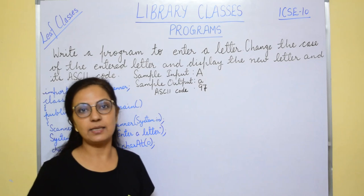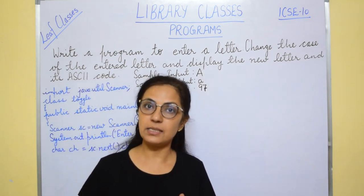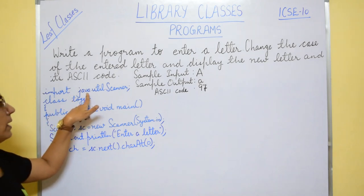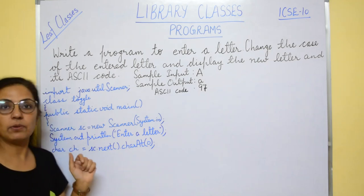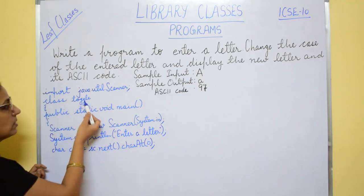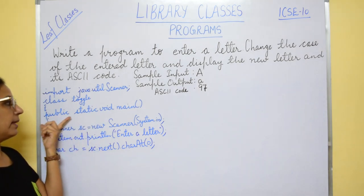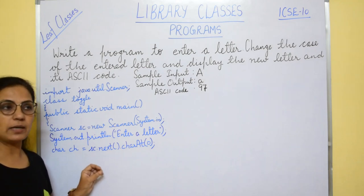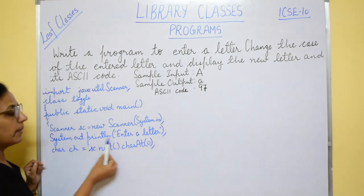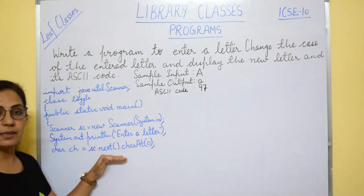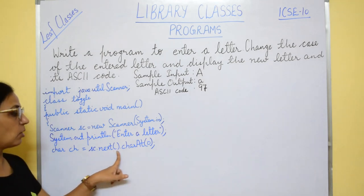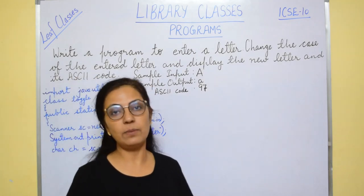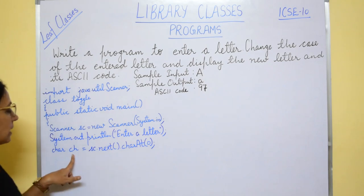First we have to input a letter. Children, whenever we have to input anything — whether it is an integer value, character value, or string — your program must begin with an import statement where you include the java.util.Scanner package. The program is written within the body of the class. Name it something relevant, like class Toggle. Then write the main function: public static void main. The first thing to do is create a Scanner object. To input a character, the function is sc.next().charAt(0). This is stored in the variable ch.